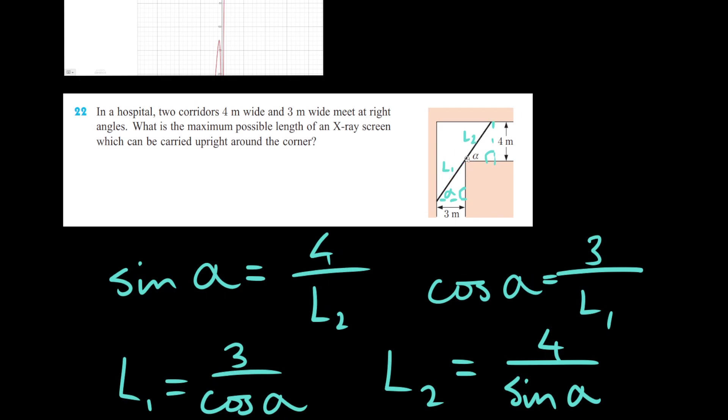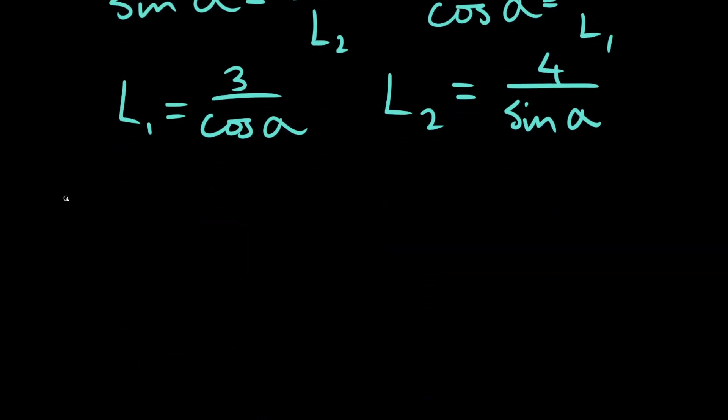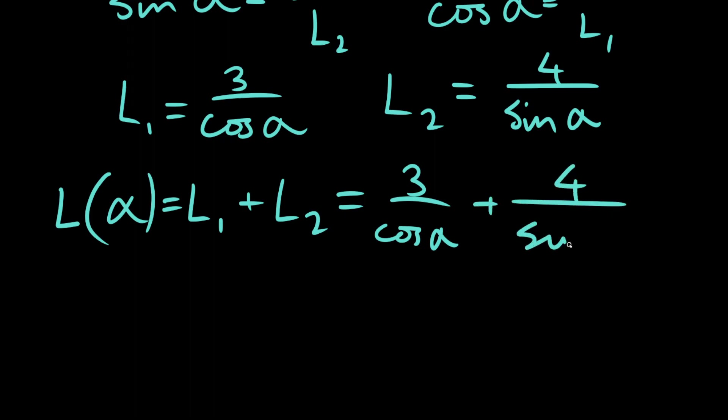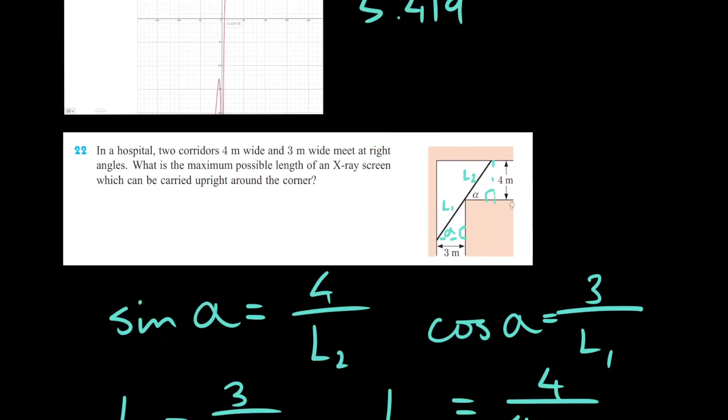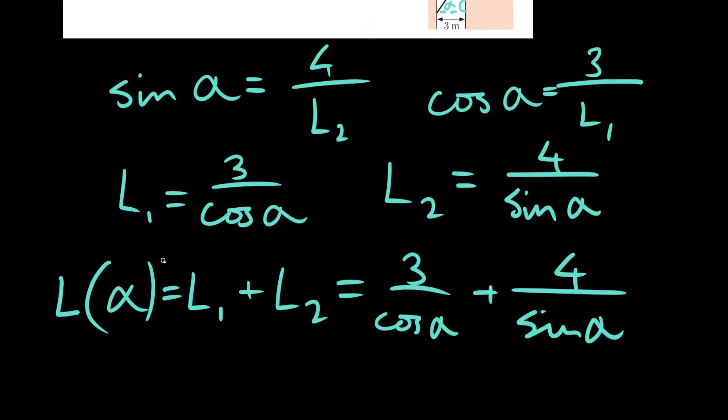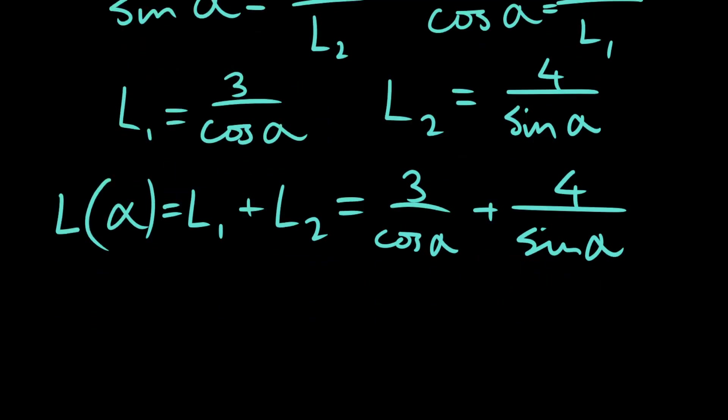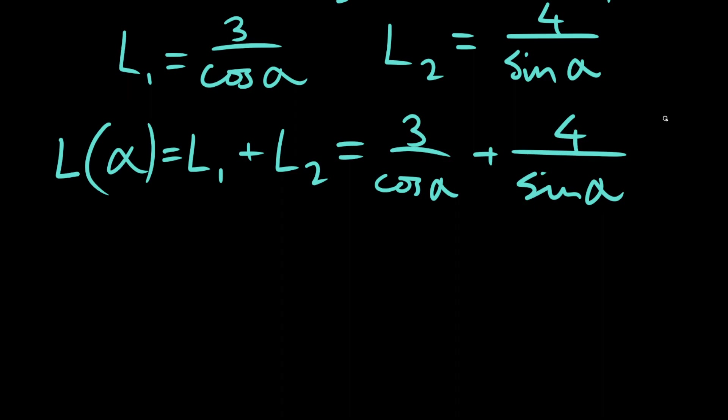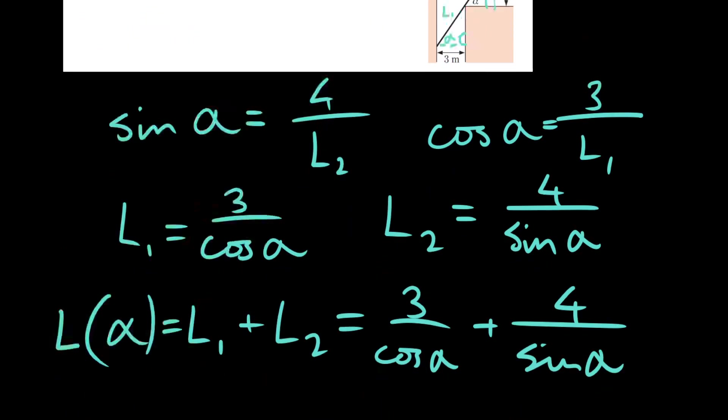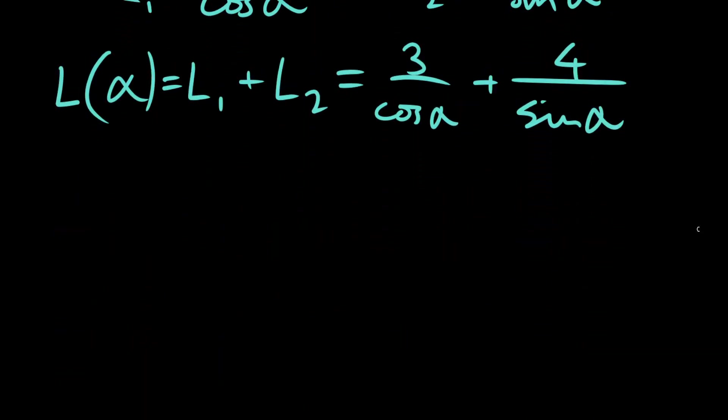And remember that our maximum would be both of these lengths added up. And luckily enough, we have a variable that's common to both of these corridors to use. So, let's call it L of alpha, is equal to L1 plus L2, which is the same as 3 over cosine alpha plus 4 over sine alpha. Since alpha is the thing we're changing, that's the independent variable in our function. This might be confusing a little bit, but don't overcomplicate it.